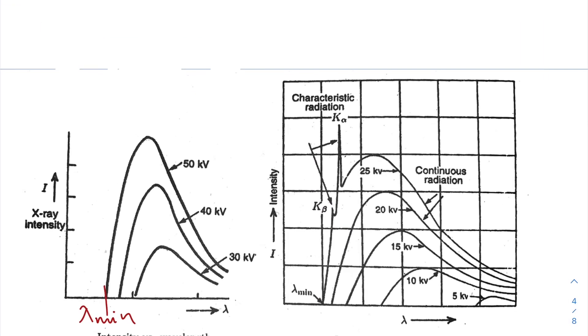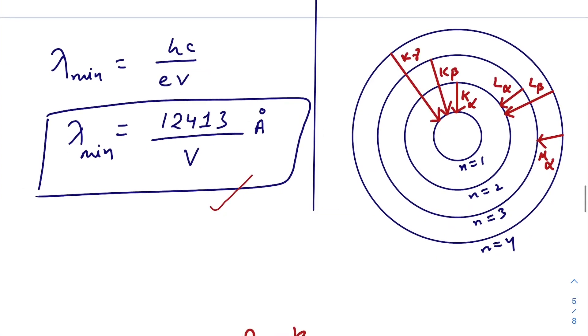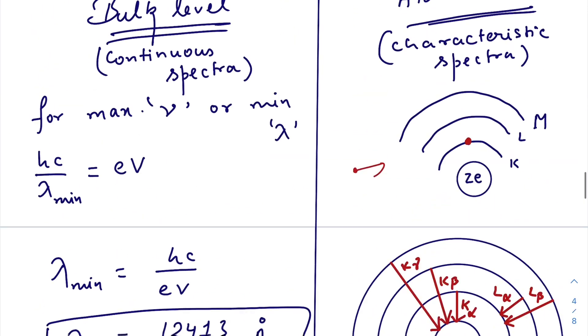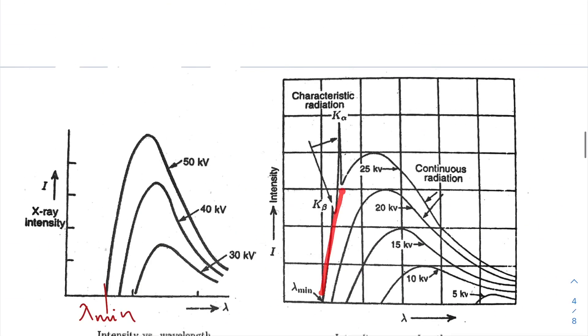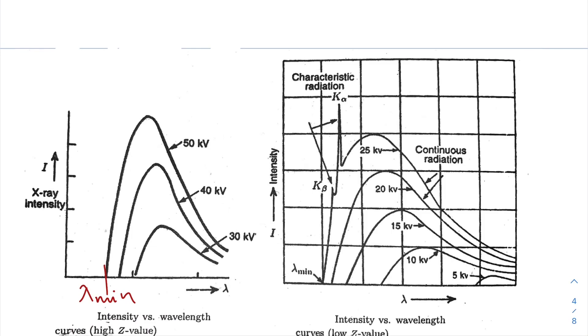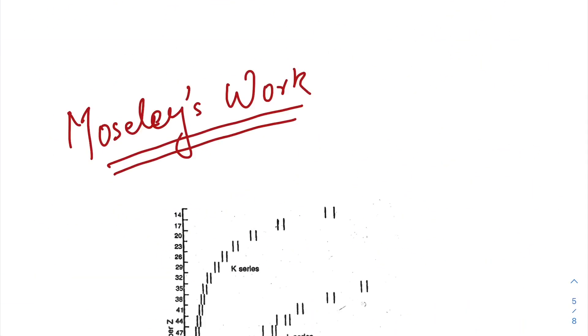The wavelength for K alpha line will be greater than K beta. That's why K alpha comes towards right and K beta towards left of the graph. Characteristic means characteristic of the target metal. This has nothing to do with the continuous spectra. Characteristic spectra is only due to the property of the target metal. Continuous spectra is totally dependent on the energy with which electrons are accelerated. Characteristic spectra is totally dependent on the target metal.